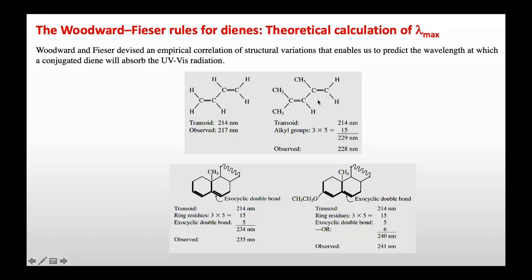This is another example of a cyclic diene. For a transoid diene where the double bonds are trans to each other, the parent value is 240 nanometers. The ring residues — there are three ring residues on this diene — each increase the value by 5, so three ring residues give a total increment of 15. We also look for exocyclic double bonds; this exocyclic double bond for the ring increases the value by 5. The total predicted value is 234 nanometers according to the Woodward-Fieser rule.